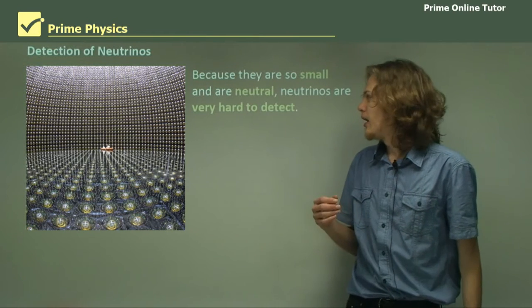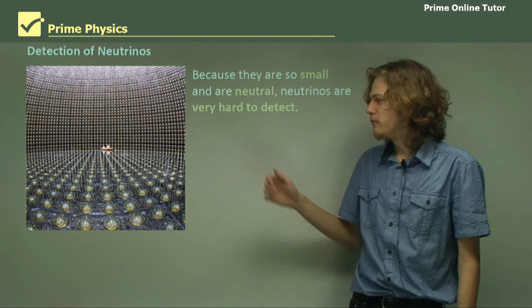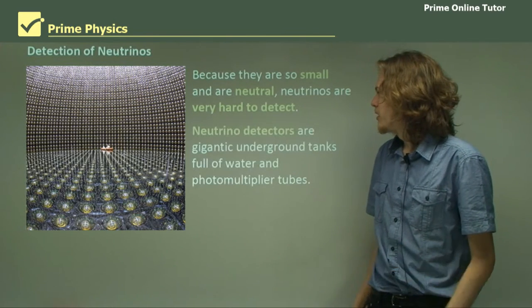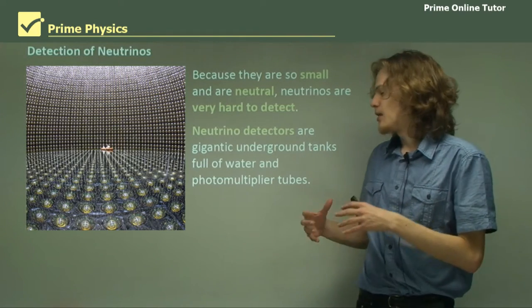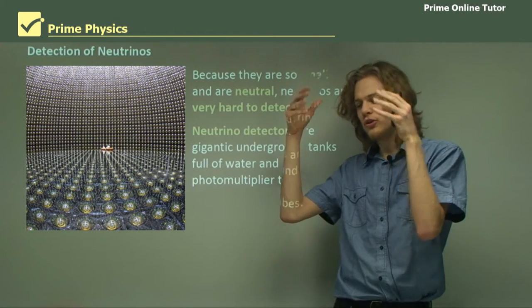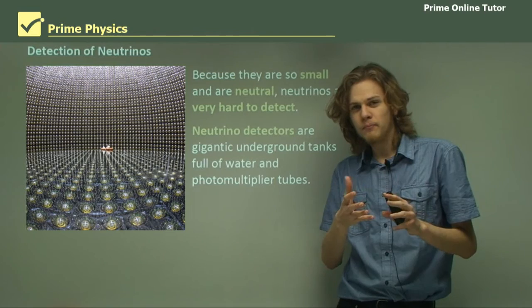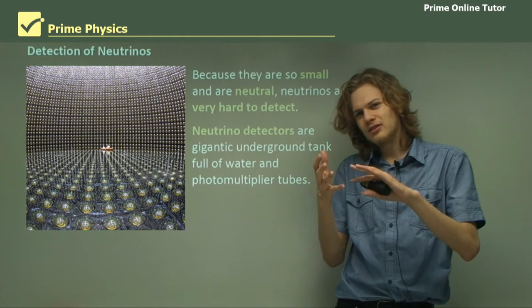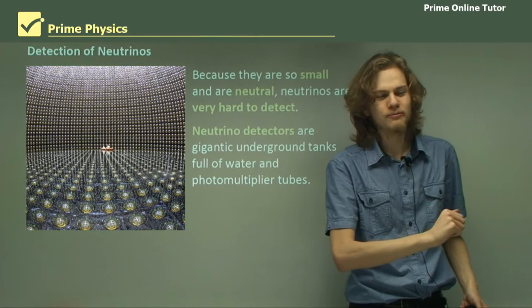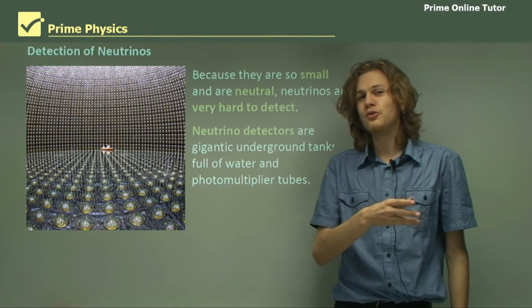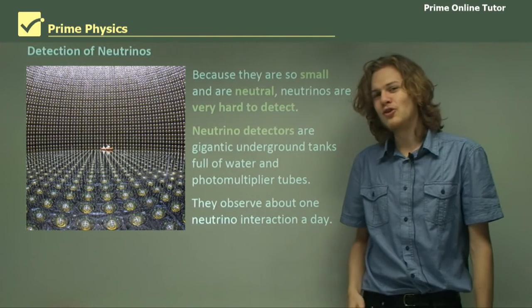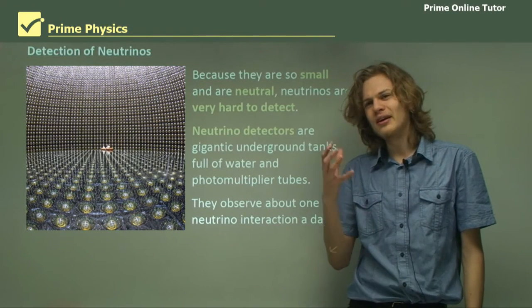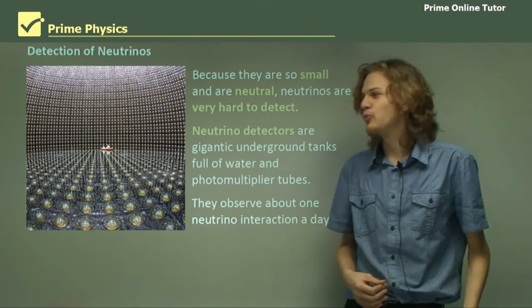Because they're so small and neutral, they are very hard to detect. What we have on the left over here is a neutrino observatory, built especially for trying to detect neutrinos. Neutrino detectors are these huge, gigantic tanks full of water and photomultiplier tubes. When a neutrino passes through water, it might slow down just a little bit, and that will release a tiny bit of light, and the light will be picked up by the photomultiplier tubes. The observatory has only managed to detect about one neutrino a day, or about 10 a week.